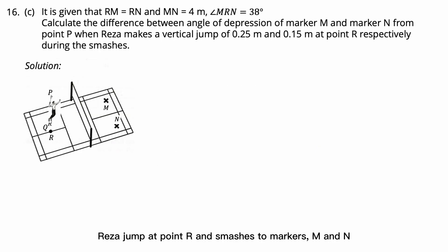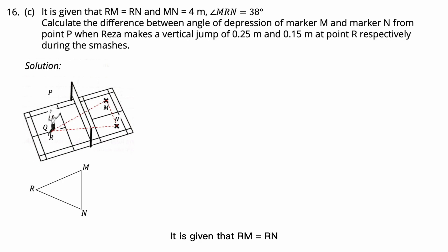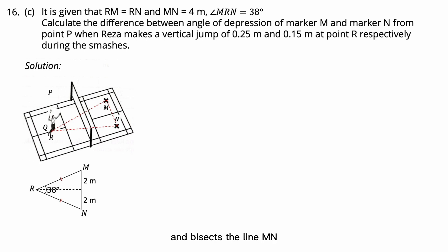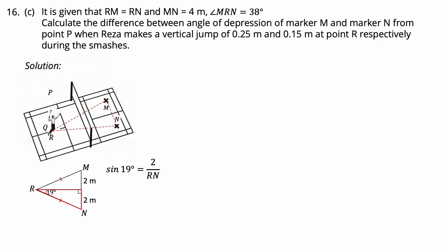Question 16C. Reza jumps at point R and smashes to markers M and N. Point R, marker M, and marker N align on a horizontal surface of a badminton court. It is given that RM equals RN and MN equals 4 meters, with angle MRN equals 38 degrees. A perpendicular line drawn from R bisects MN, forming two right-angle triangles and bisecting angle MRN to 19 degrees. Using the sine formula: sin 90° = 2 ÷ RN, so RN equals 2 divided by sin 19°, giving RN equals 6.143 meters.